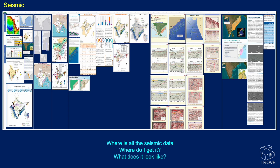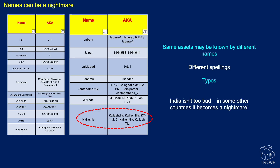Countless examples are given in these sheets. Names can be a nightmare — the same assets may be known by different names or different spellings, and there can also be typos. Here's an example highlighted in the red circle: different spellings of the same asset. India isn't quite as bad as some other countries, where there can be up to 10 different names associated with a single asset.